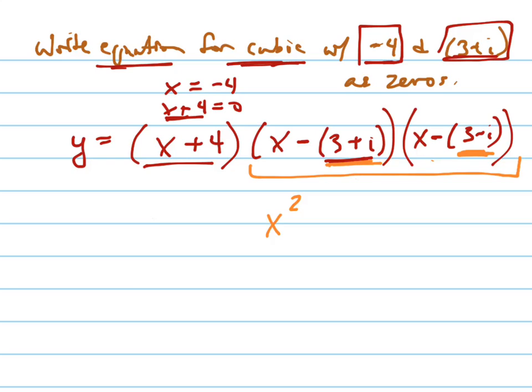So the rule is x squared minus the sum of the zeros plus the product of the zeros. That's the really nice shortcut.